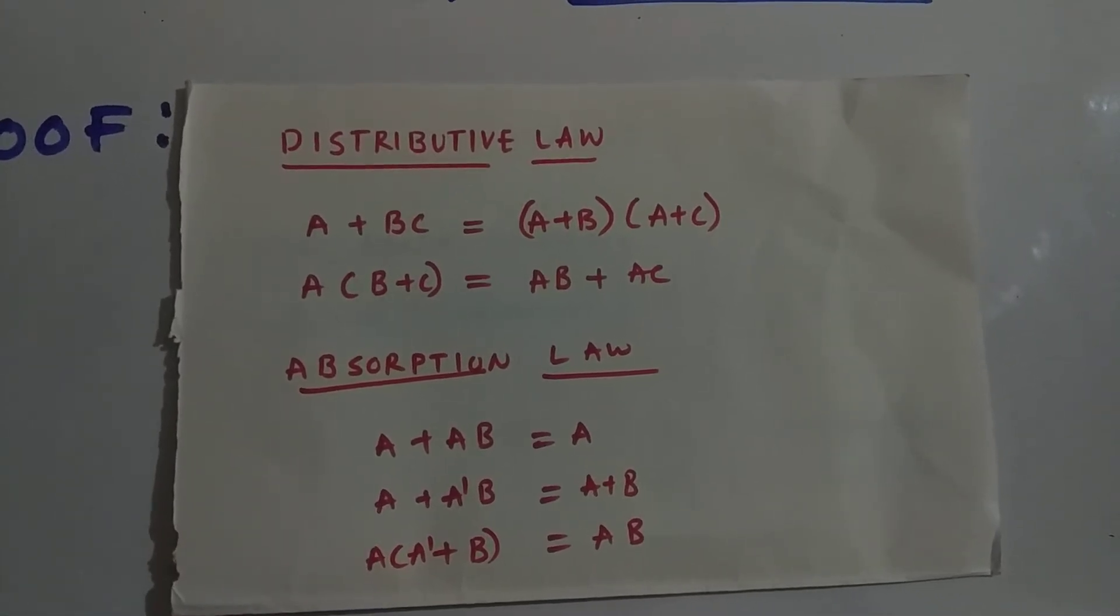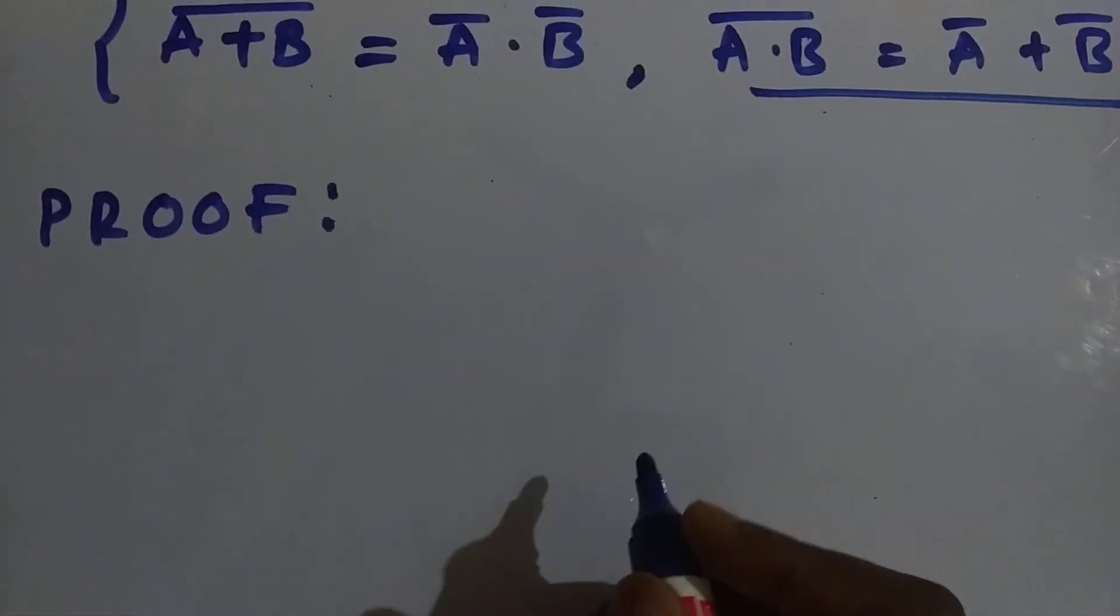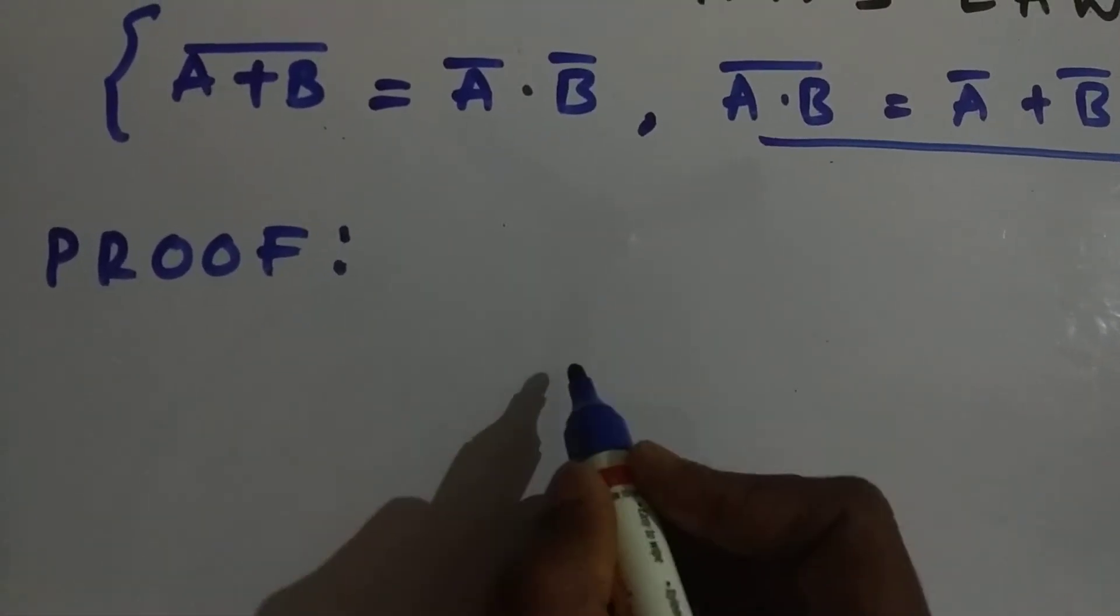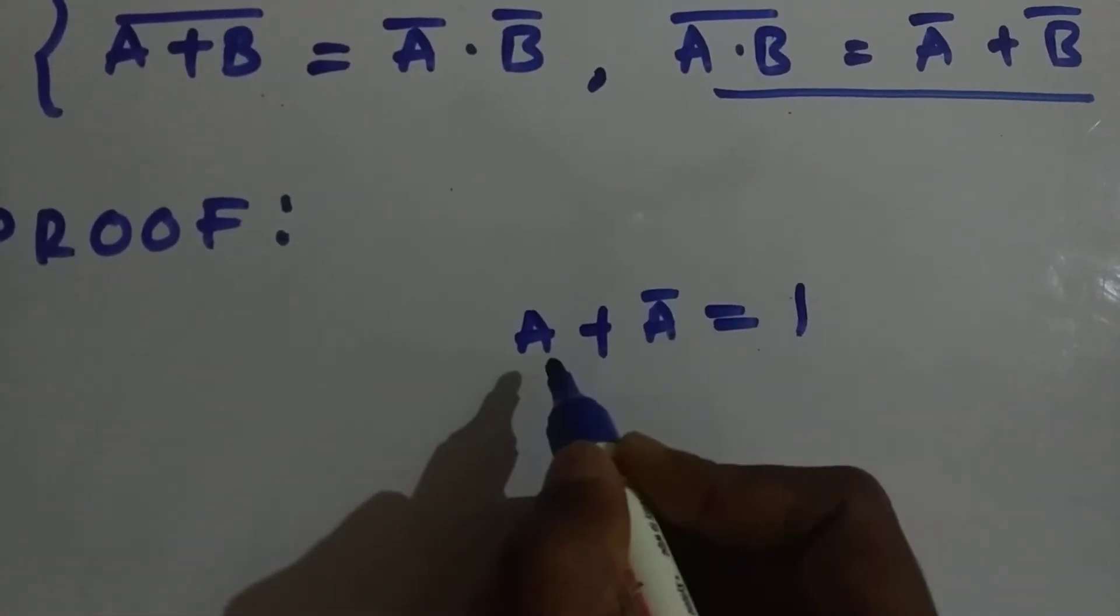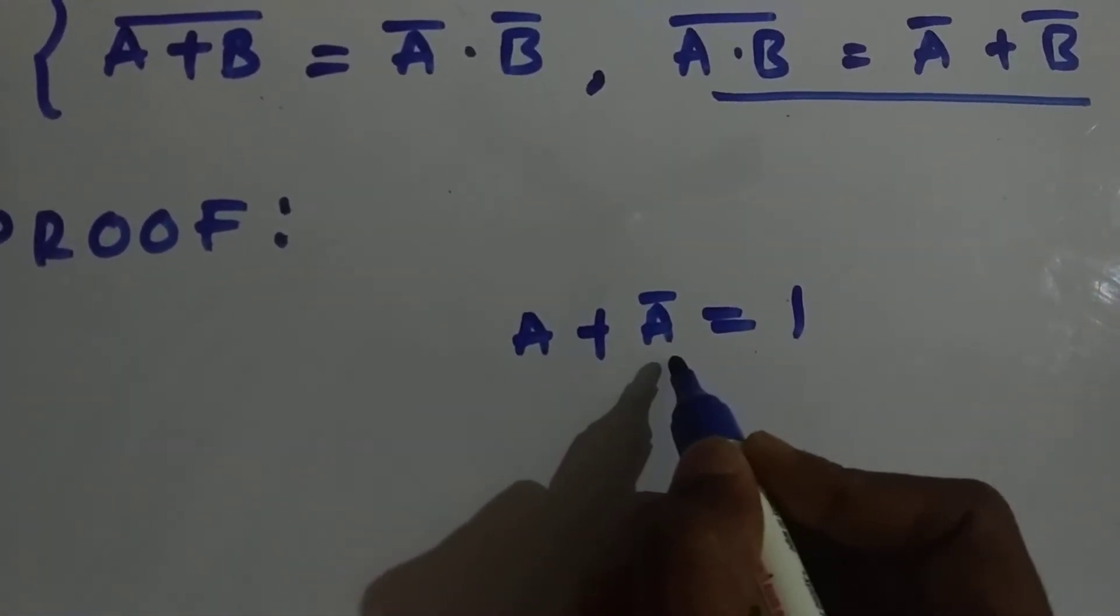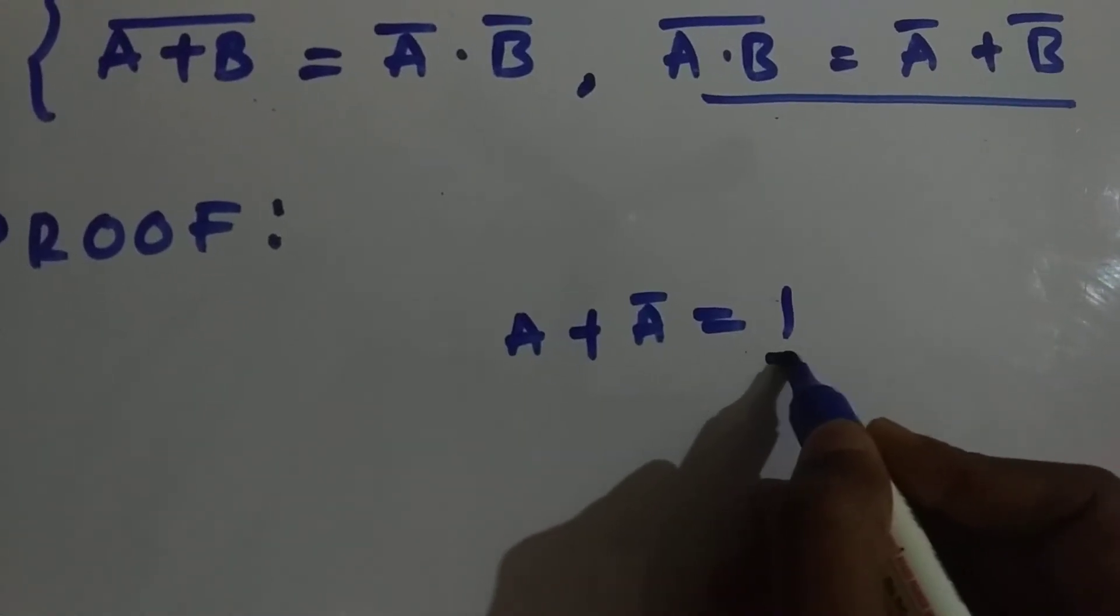I'm going to go with De Morgan's law proof. Coming to the proof, we know that A plus A bar equals to 1. Here A is a variable and its complement; we are adding them and we'll get the result as 1.